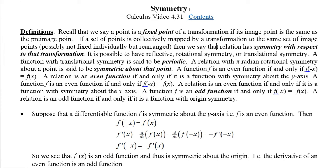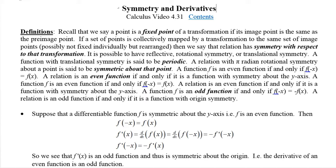Let's talk about symmetry and derivatives. We say that a fixed point of a transformation is a point whose image is the same as its pre-image. But collectively, if we map a whole set of points — like a whole graph — and that transformation maps it to the same image points collectively, although not necessarily fixed individually, maybe rearranged but collectively the same, we say it has symmetry with respect to that transformation.